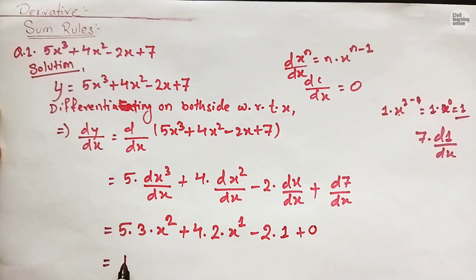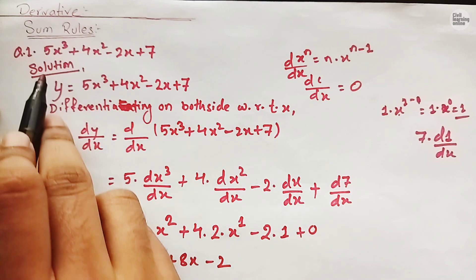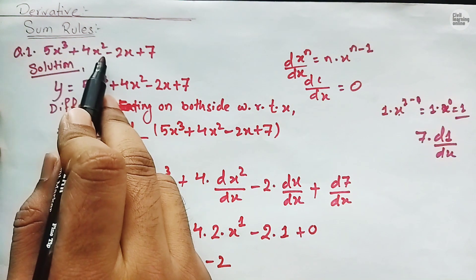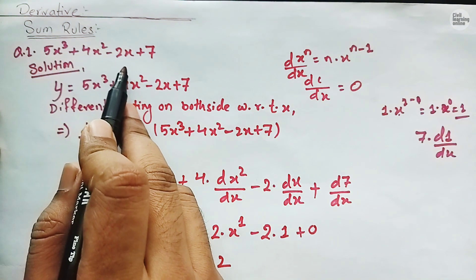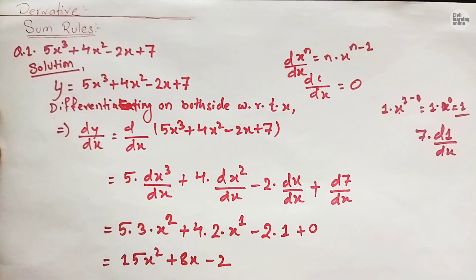Ultimately we will have 15x squared plus 8x minus 2. This is the answer for the derivative of 5x cubed plus 4x squared minus 2x plus 7. I am going to solve one more problem and I will also provide a bonus question in this lecture.